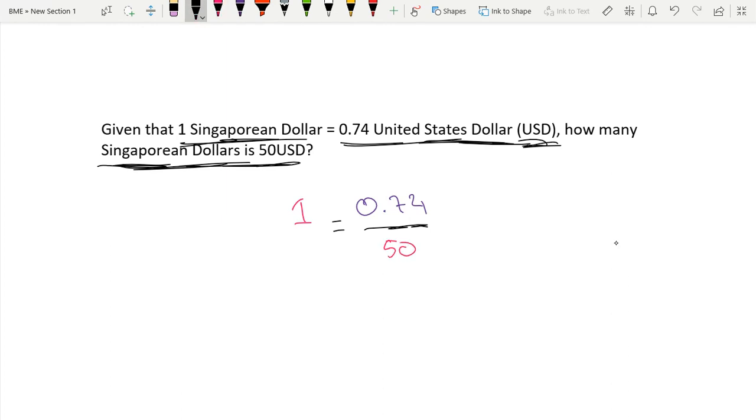50 US Dollars is equal to 1 over x number of Singaporean Dollars. X is just the number of Singaporean Dollars that's equal to 50 USD. The reason why we can make a proportion like this is because the ratio from 1 to 0.74 and from x to 50 is always going to remain proportionate.